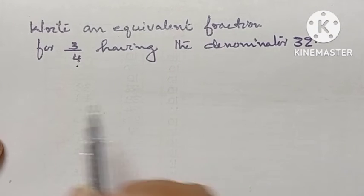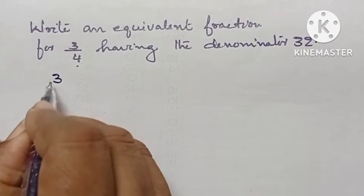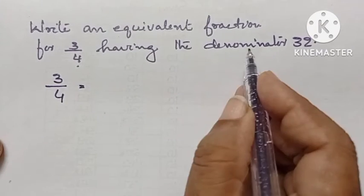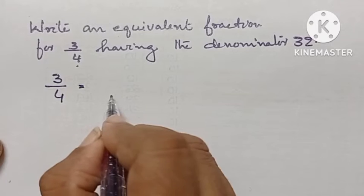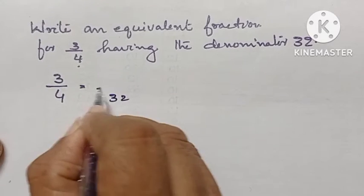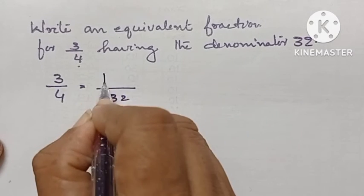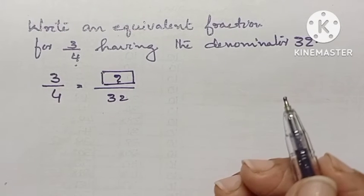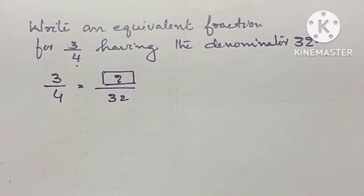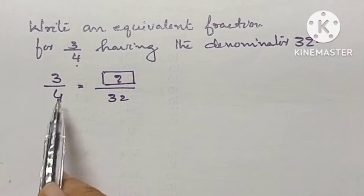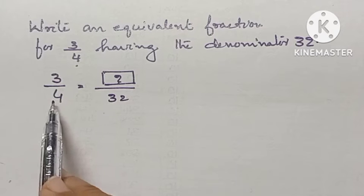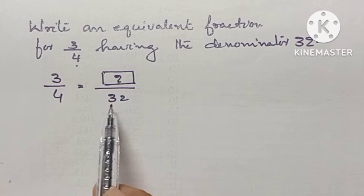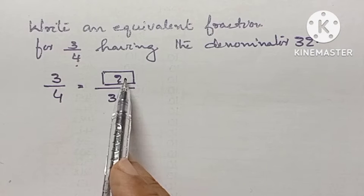That means we have to write an equivalent fraction for 3 by 4 having the denominator 32. We have to find the numerator. So: 3 by 4 equals dash divided by 32. We have to find the numerator.